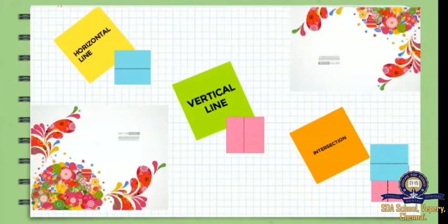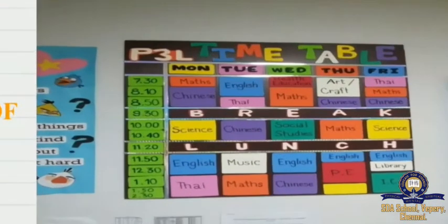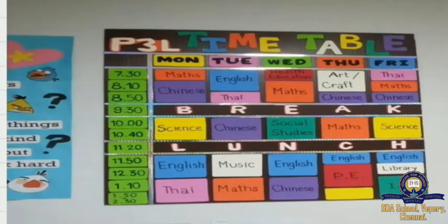The next example is your class timetable. In your class timetable, you have rows and columns. In the columns, you have timing and the days: Monday, Tuesday, Wednesday, Thursday, Friday. For Monday, at 7:30 you have maths class, at 8:10 you have Chinese class, then you have your break, and from 10 to 10:40 you have science class. That is the column.